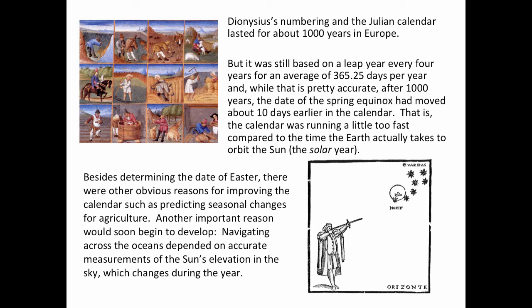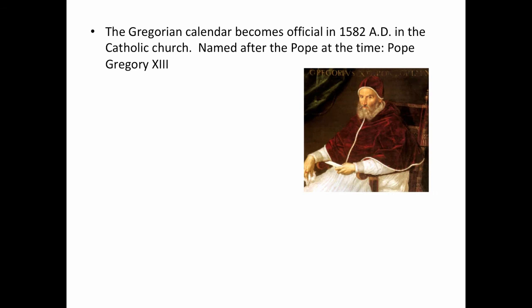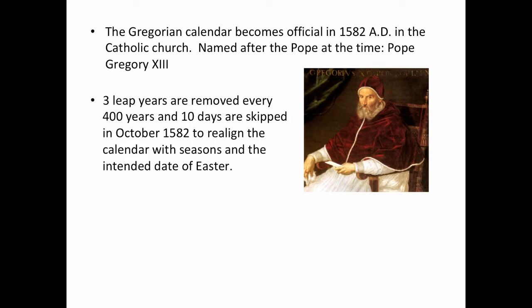Besides determining the date of Easter, there were other obvious reasons for improving the calendar, such as predicting seasonal changes for agriculture. Another important reason would soon develop: navigating across the oceans depended on accurate measurements of the sun's elevation in the sky, which changed during the year. The Gregorian calendar became the official calendar in 1582 AD in the Catholic Church, named after the Pope at the time, Pope Gregory XIII. Three leap years are removed every 400 years, and ten days are skipped in October of 1582 to realign the calendar with the seasons and the intended date of Easter.